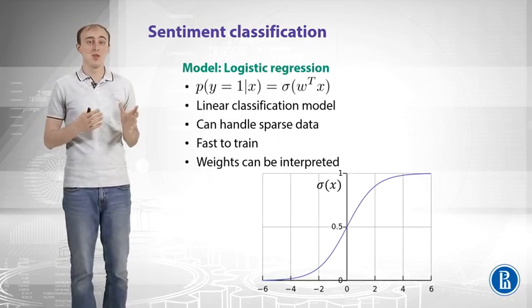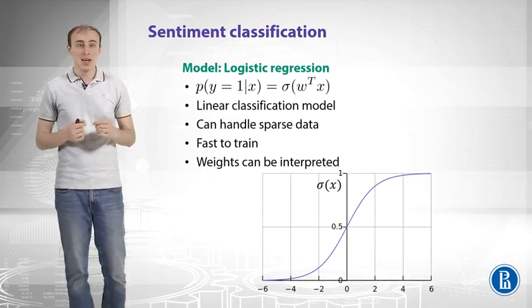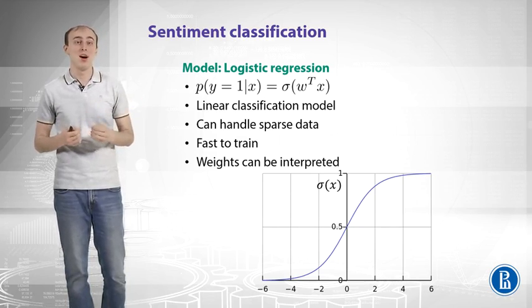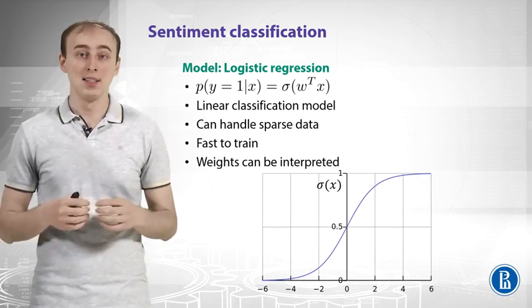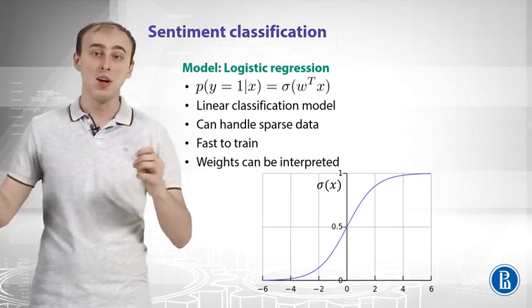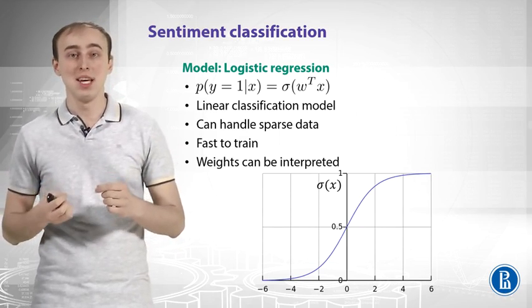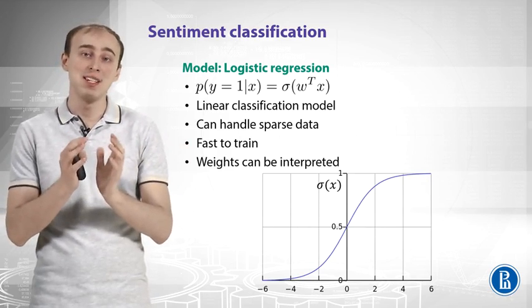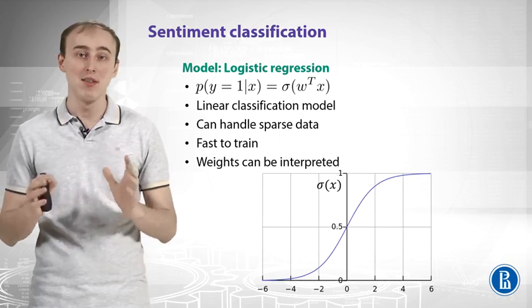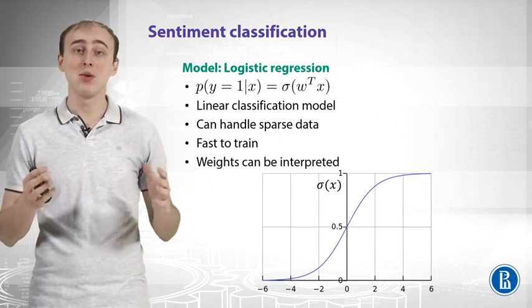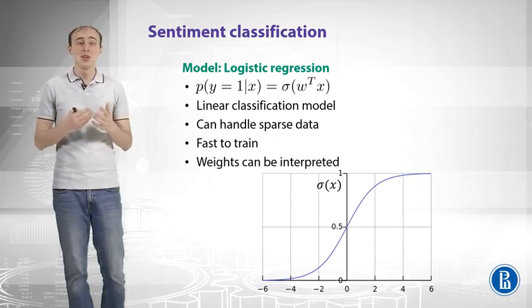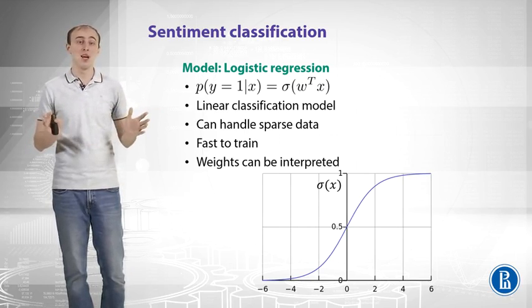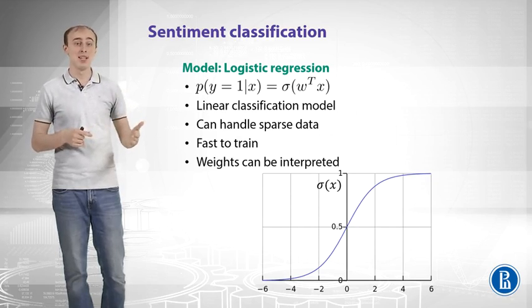That sparsity applies some restrictions on the models we can use. The model that is suitable for these features is logistic regression. It tries to predict the probability of a review being positive given the features — the vector of TF-IDF values. You find a weight for every feature, multiply each TF-IDF value by its weight, sum all of those values, and pass it through a sigmoid activation function. It's a linear classification model, which means it can handle sparse data, is really fast to train, and the learned weights can be interpreted.